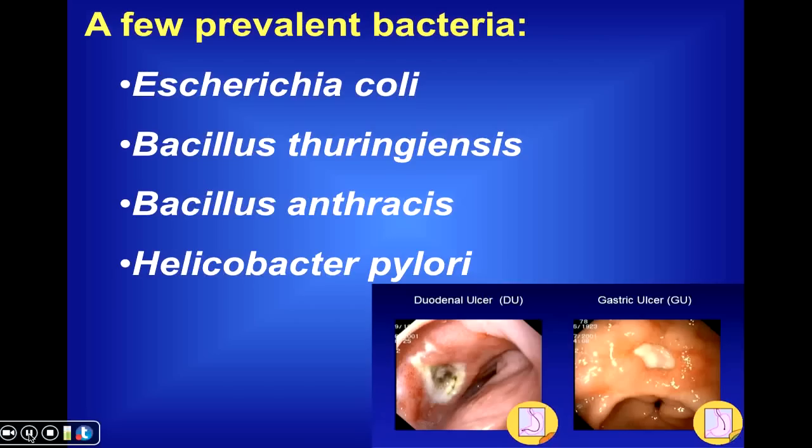There are, however, some strains of E. coli that are pathogenic. These are the ones responsible for the occasional outbreak of food poisoning that you might hear about relating to undercooked ground beef.